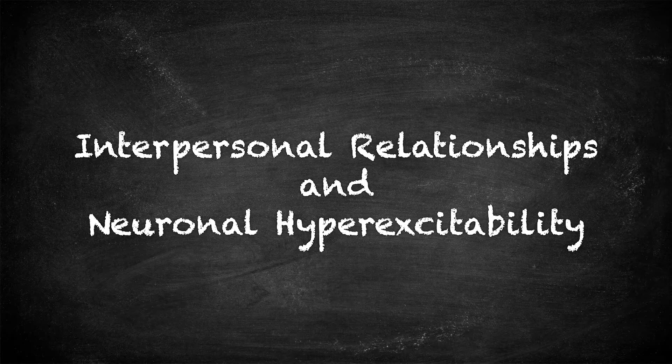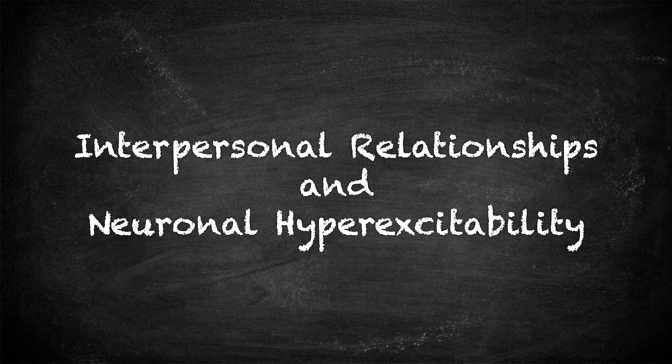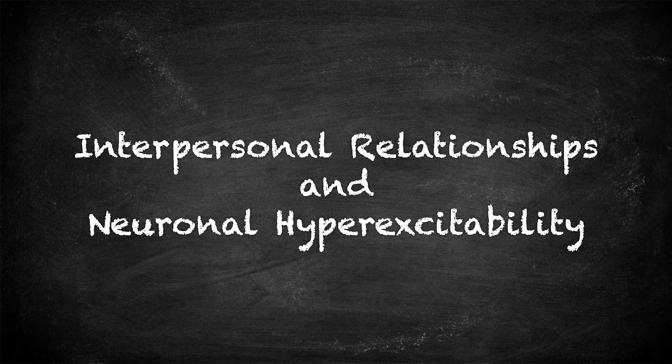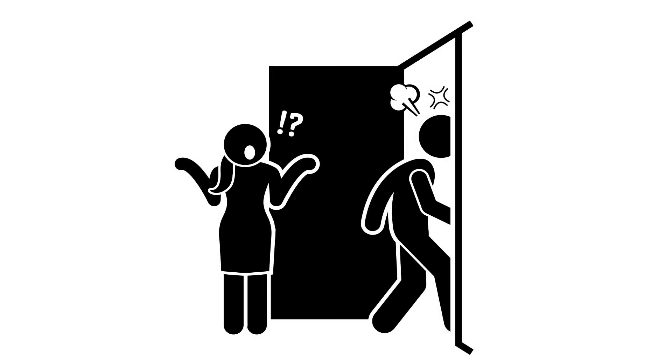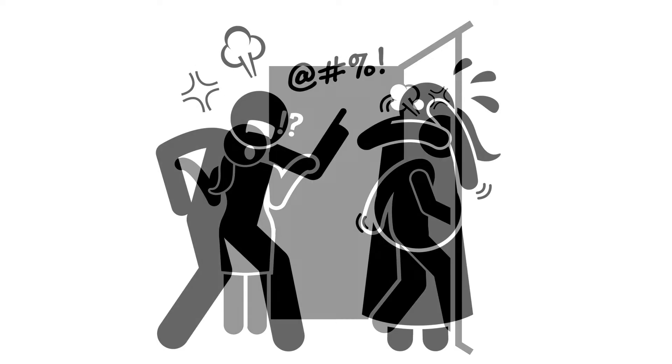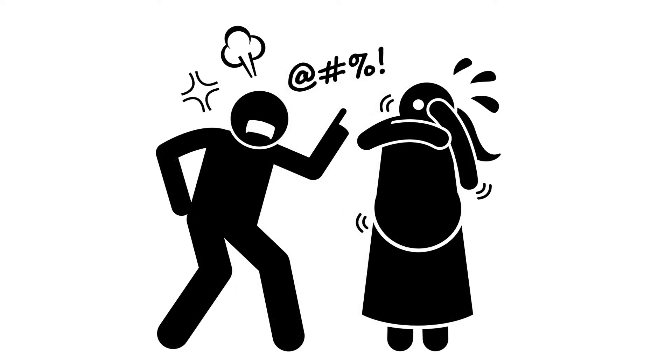In this segment of the series we will discuss interpersonal relationships in relation to neuronal hyperexcitability. Nothing has greater potential to create emotional distress than strained relationships. That's because interpersonal conflict can create extremely powerful emotions, but with relatively little ability to control the way the other person is thinking and feeling.